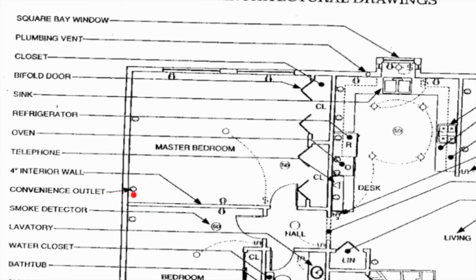Convenience outlet — basically a circle with two lines going through it; that would be an outlet, that's where you plug things in. So another outlet here, another outlet here, and so on going around the room. Each of the rooms will have multiple outlets.